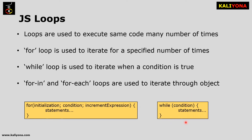While loop syntax is like this: write 'while', then the condition, and inside the flower braces write the statements. When the condition is true, those statements will execute. Now let's look at a practical example.